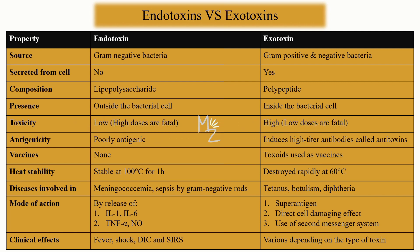For exotoxins, clinical findings vary from toxin to toxin. If Staph bacteria releases toxic shock syndrome toxin type 1, it can cause fever, rash, and hypertension. If Clostridium perfringens releases alpha toxin, it can cause low oxygen supply to tissues, leading to low energy and tissue cell death. If cholera toxin is released by Vibrio cholerae, it leads to watery, rice-water-like stools. These are all the features that differentiate endotoxins from exotoxins.